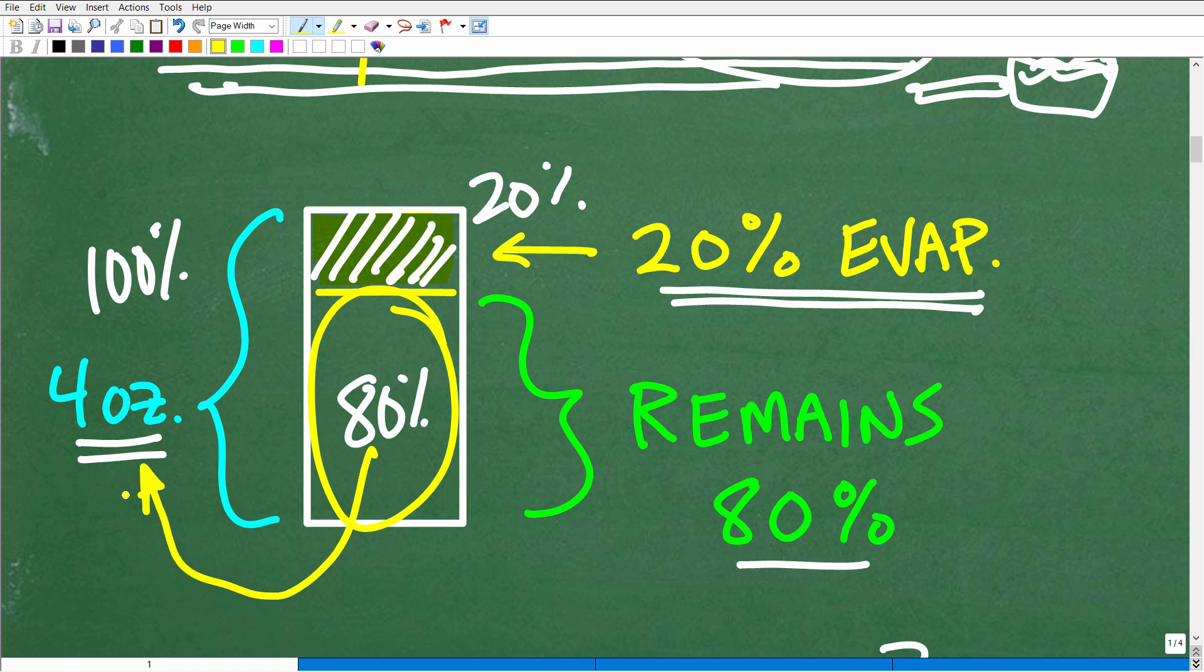Now, for some of you out there, you're probably confused this. You're like oh, 20% of four ounces. You may have taken 20% of, you may have found 20% of four ounces. And that was your answer. If that is the case, no big deal. Just remember, you got to understand what's going on. That's not how to get the answer. That's how much, that's how many ounces evaporated away.